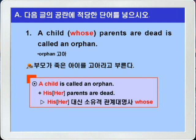원래 이 문장은 'A child is called an orphan'이라는 문장과 'His 혹은 her parents are dead'라는 두 문장에서 A child와 his/her가 공통관계니까 A child가 선행사, his/her를 소유격 관계대명사 whose로 받아서 'A child whose parents are dead is called an orphan'이 되는 것이죠. 정답을 확인해보고 2번으로 가겠습니다.